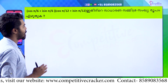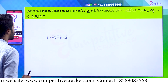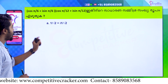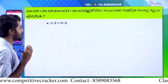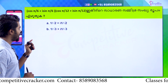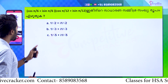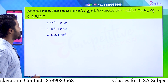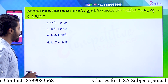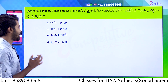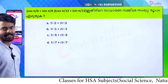This is the question. The options are: Option A: 1/2 + i·(1/√2); Option B: 1/√3 + i·(1/√3); Option C: 1/√5 · i·(1/√5); Option D: 1/√7 + i·(1/√7). Here is the answer.